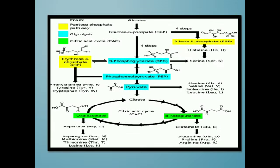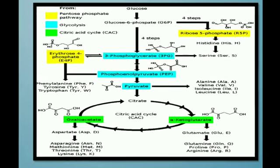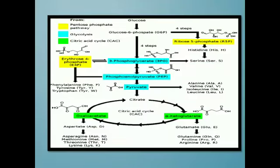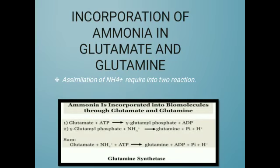A detailed diagram of the biosynthesis of amino acids shows that glucose can form glucose-6-phosphate, then 3-phosphoglycerate, then phosphoenolpyruvate, then pyruvate. Citrate can enter the citrate cycle; alpha-ketoglutarate can form glutamate and glutamine, and oxaloacetate can form aspartate.